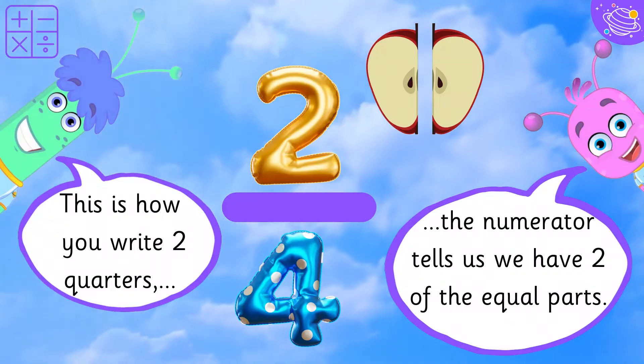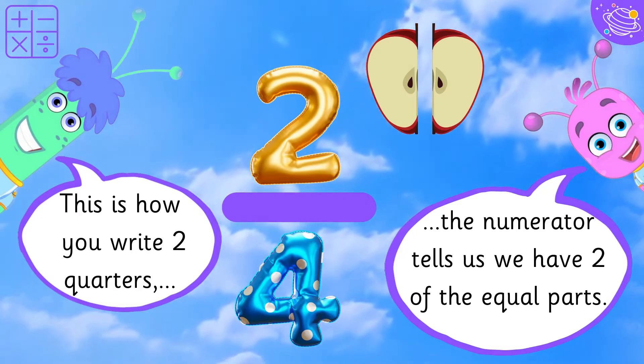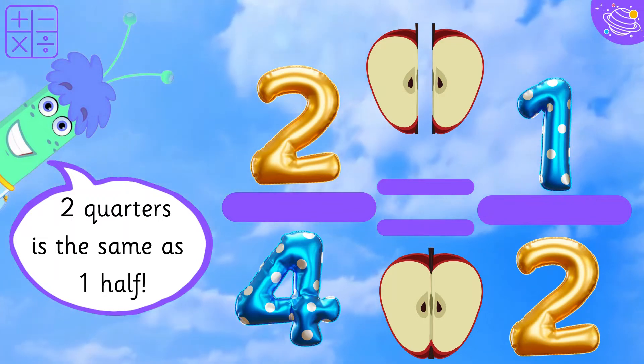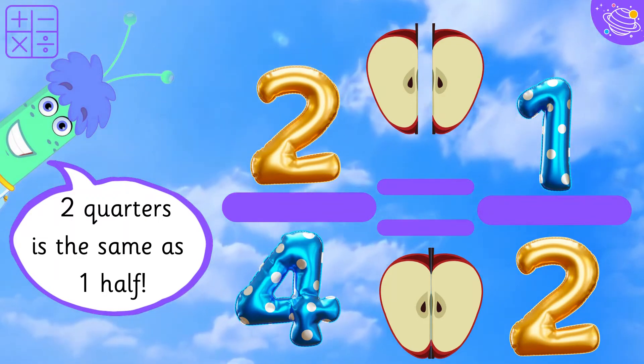This is how you write two quarters. The numerator tells us we have two of the equal parts. Two quarters is the same as one half.